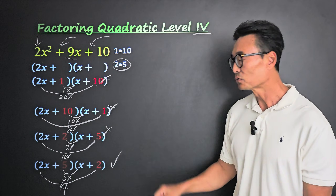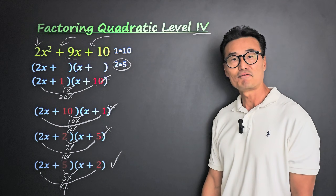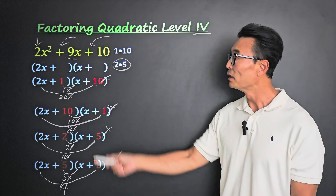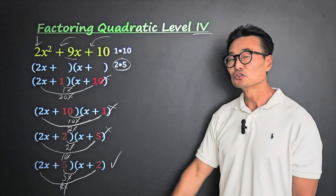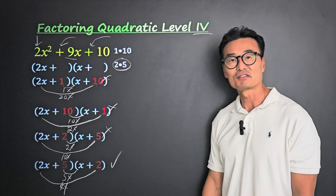So we know that's going to be the correct factored form of 2x squared plus 9x plus 10.